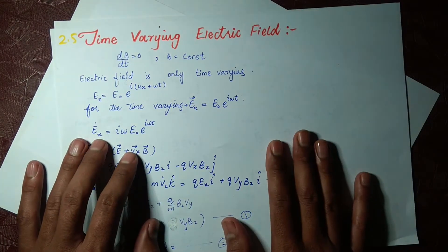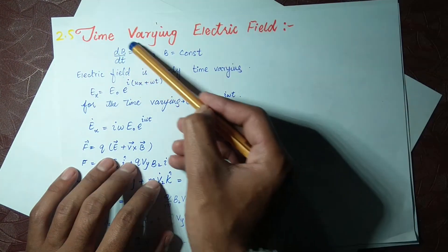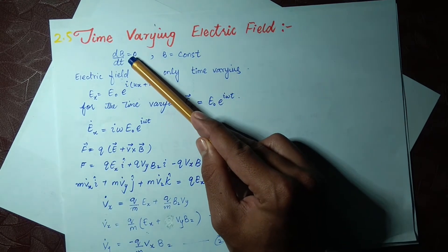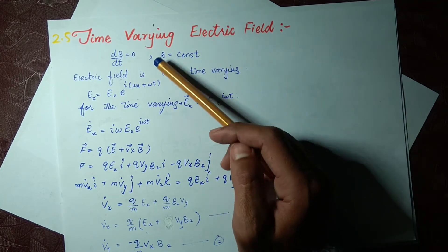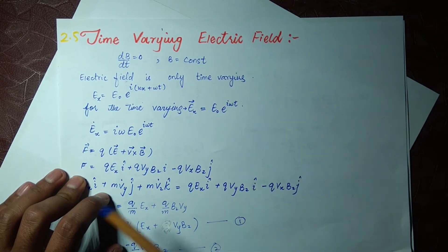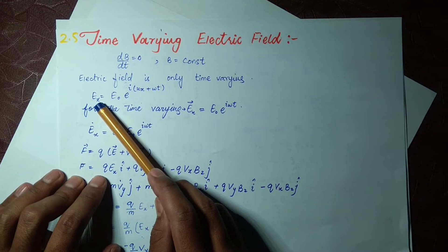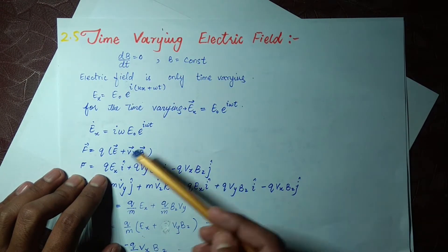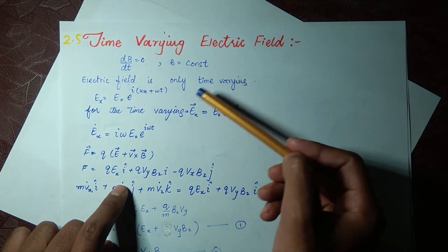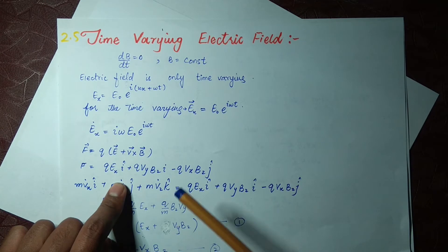Now let's move on to the derivation. In our derivation, the magnetic field is constant and not varying with respect to time — section 2.6 is the case where magnetic field is varying. So in this first case, the magnetic field is zero and the electric field is varying with respect to time. We take E(x) as our electric field equation, representing a propagating wave: E(x) = E₀ e^(iωt).